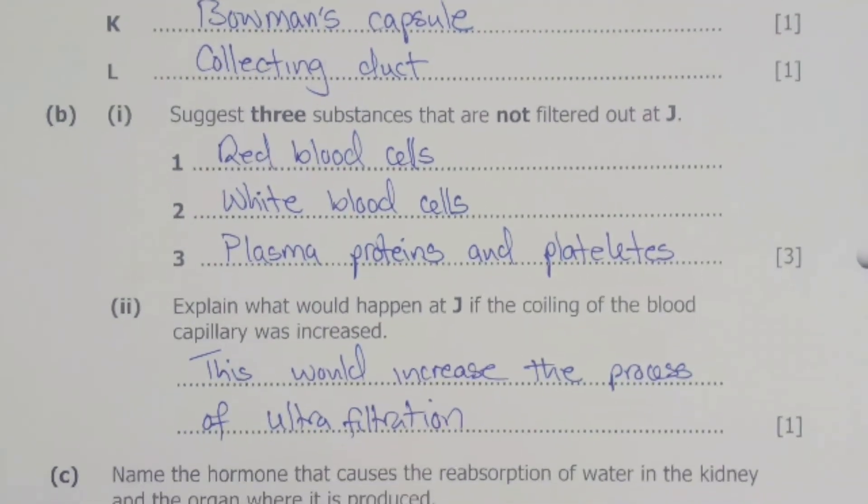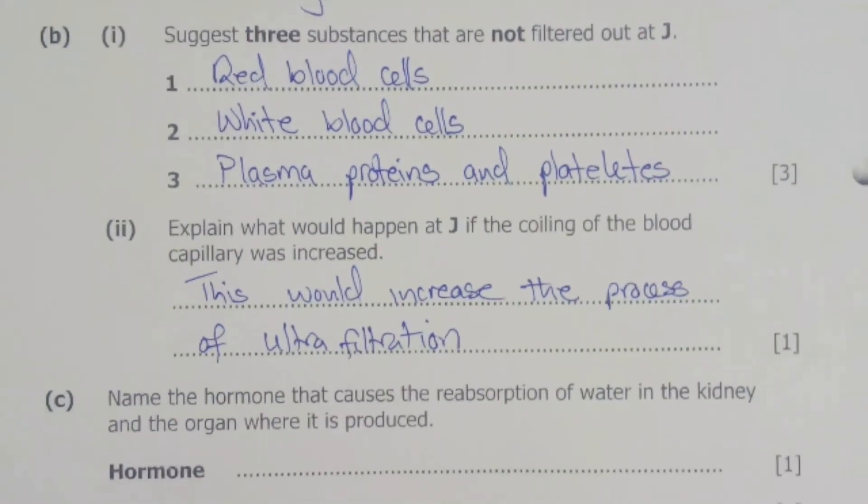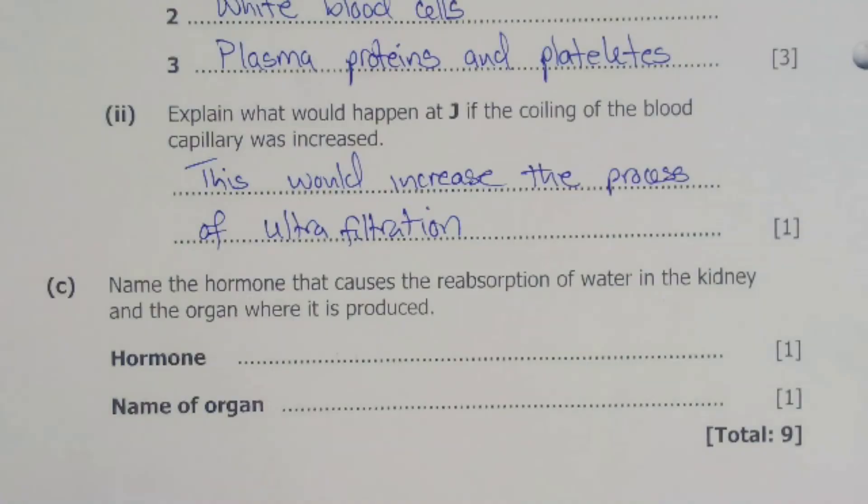Here it says: Name the hormone that causes the reabsorption of water in the kidney and the organ where it is produced. So reabsorption of water is actually done by the hormone anti-diuretic hormone.